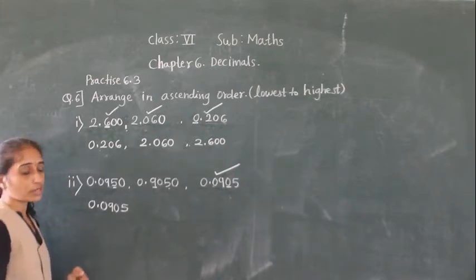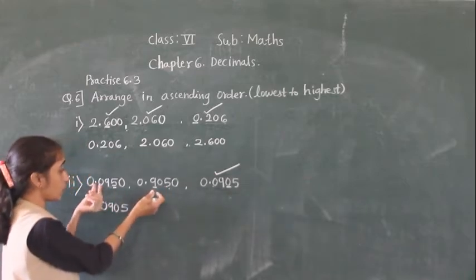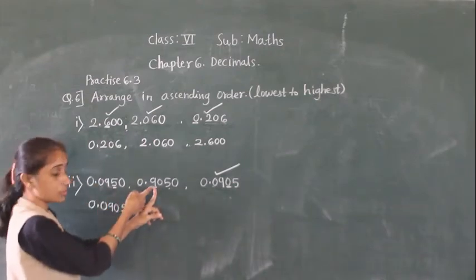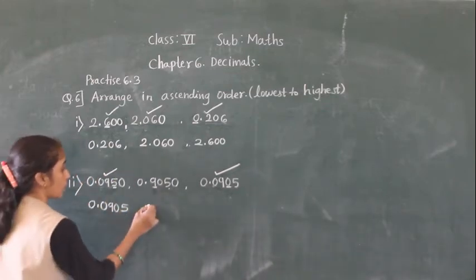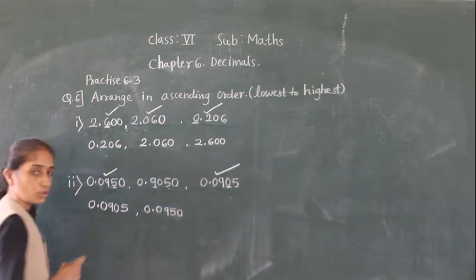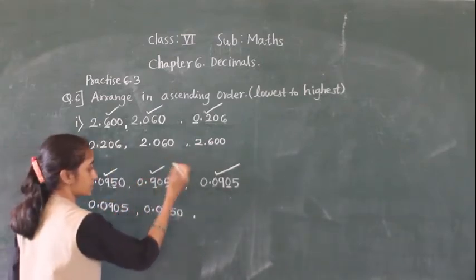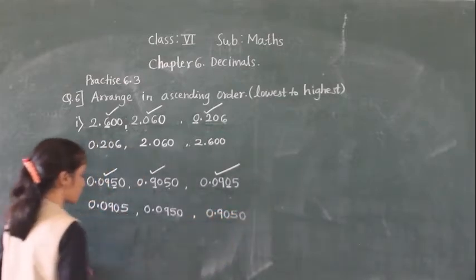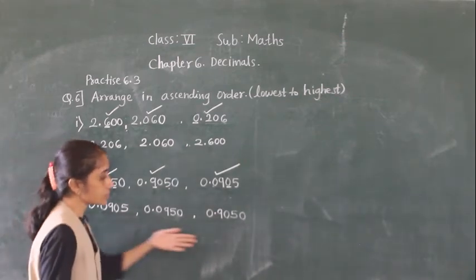Now compare the remaining two numbers. At the tenths place here it is 0 and here it is 9, so obviously the number with 9 at the tenths place is greater. So 0.0950 comes second, and 0.9050 comes last. These numbers are now arranged in ascending order, small to big.